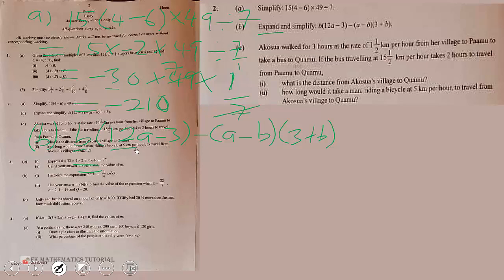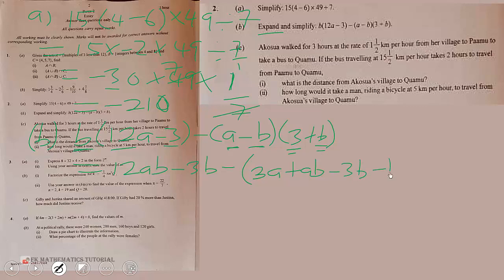Expanding: b times 12a gives 12ab, b times negative 3 gives negative 3b. Then minus a times 3 is negative 3a, and a times b is plus ab. We also have minus 3b and minus b squared.